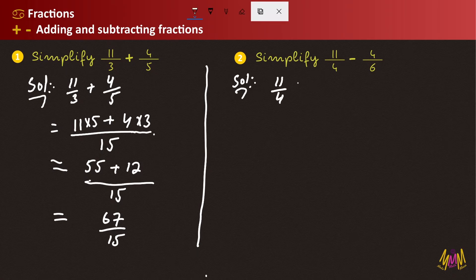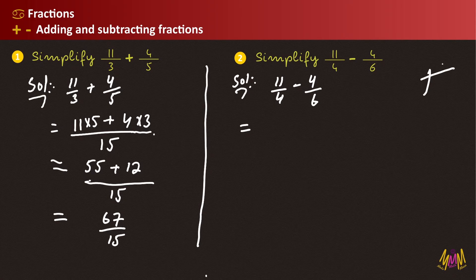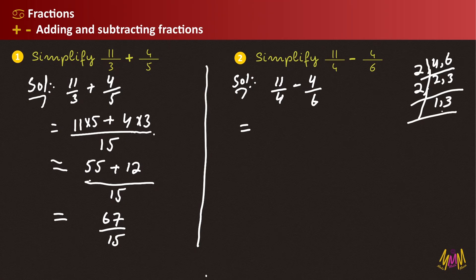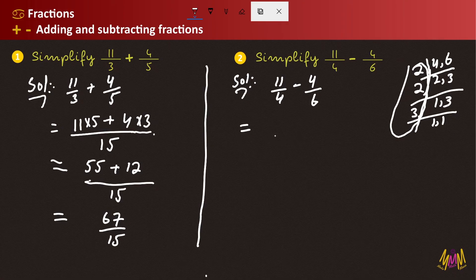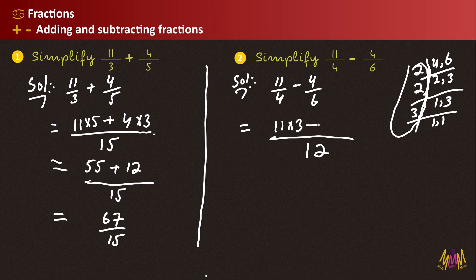So for 11 divided by 4 minus 4 divided by 6: the LCM of 4 and 6 — since 2 twos are 4 and 2 threes are 6 — is found by dividing: 2 ones are 2, 3 ones are 3. So 2 multiplied by 2 is 4 and 4 multiplied by 3 is 12. Therefore, 4 and 6 are both equal to 12, making 12 the common denominator.